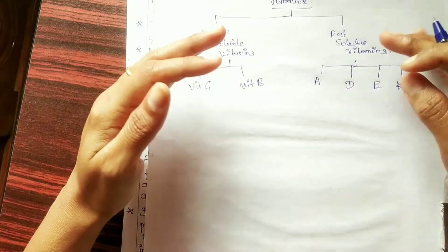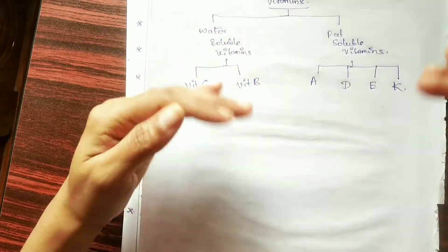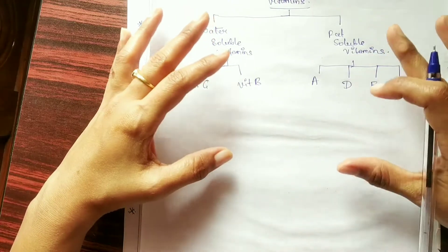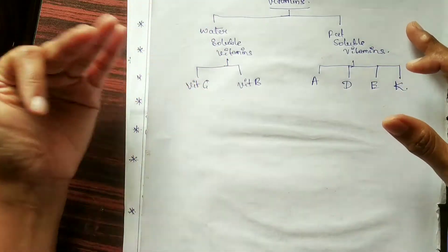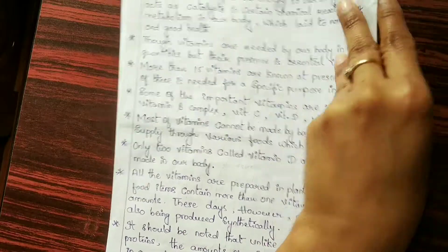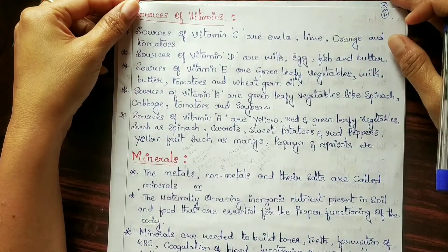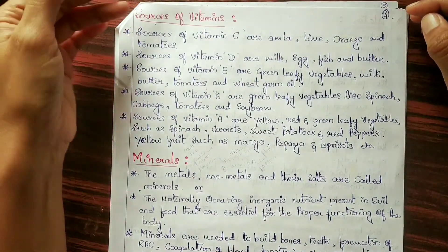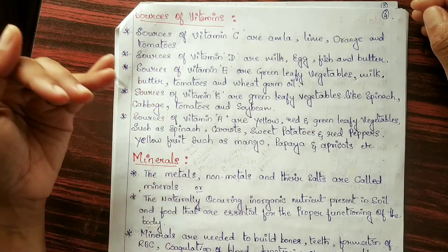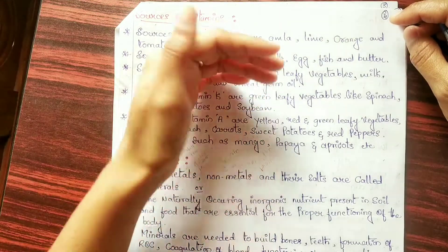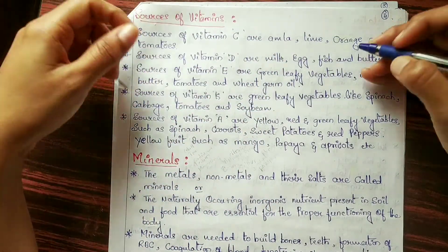We will study vitamins in detail — with special reference to roles, classification and function — in the next video. As a component of food, this much information is enough. I also want to mention the sources of vitamins. There are two types: water-soluble and fat-soluble vitamins. For vitamin C, sources include lime, oranges and tomatoes.